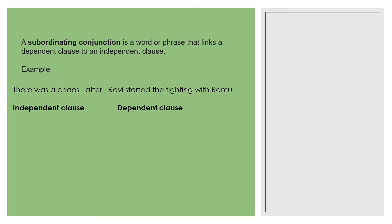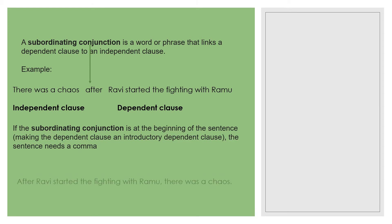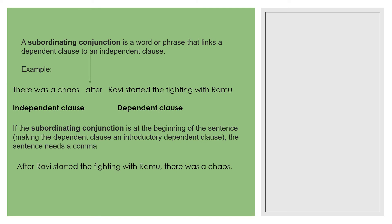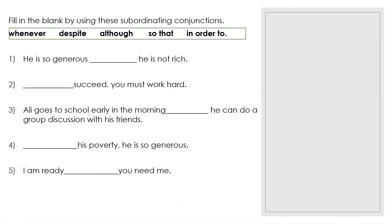There are two ways to use subordinating conjunction. First, you can put it in the middle of the sentence. Second, you can put it at the beginning. For example: 'There was a chaos after Ravi started the fighting with Ramu' — conjunction in the middle, no comma needed. Or: 'After Ravi started the fighting with Ramu, there was a chaos' — conjunction at the beginning, comma required after the dependent clause.